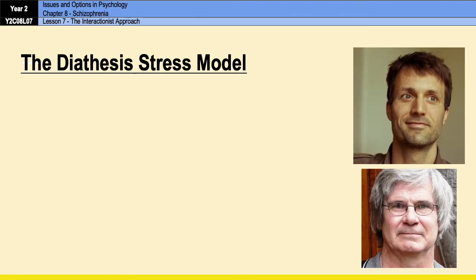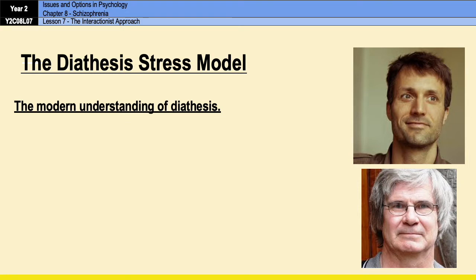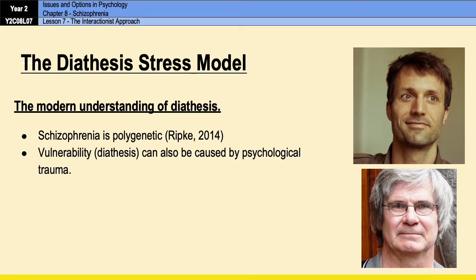In recent times our understanding of both vulnerability and stress have changed. It is now clear that schizophrenia is actually the result of many different genes rather than just one — schizophrenia is a polygenic condition, as was shown by Ripke in 2014. It's also now understood that there are a wide range of factors beyond genes that can cause vulnerability, including psychological trauma. In this more contemporary model, psychological trauma would be the diathesis — the vulnerability — rather than the stressor, as it was in the original model.